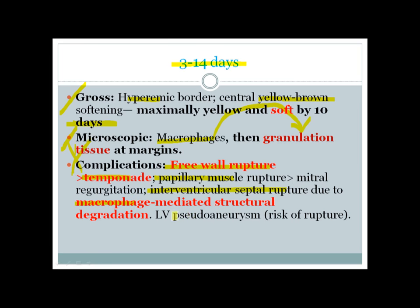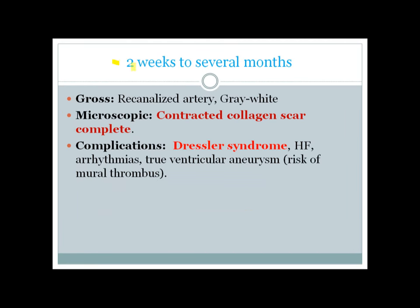Patients can also develop left ventricular pseudoaneurysm because the developing granulation tissue replacing necrotic myocardium is very weak and can rupture. From 2 weeks to several months after MI, gross pathology shows a recanalized artery and gray-white coloration of necrotic myocardium; microscopy shows formation of a collagenous scar that is nearing completion.